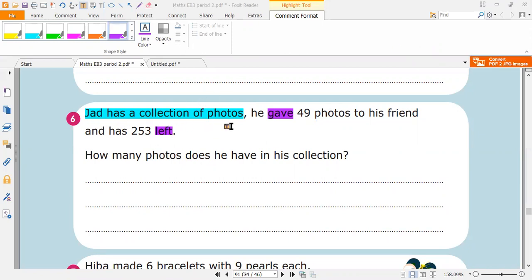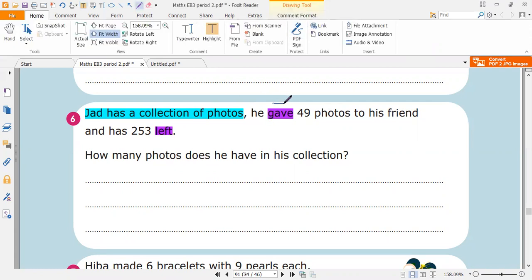Jad has a collection of photos. He gave, the word gave here means minus. He gave 49 photos to his friend and has 253 left.